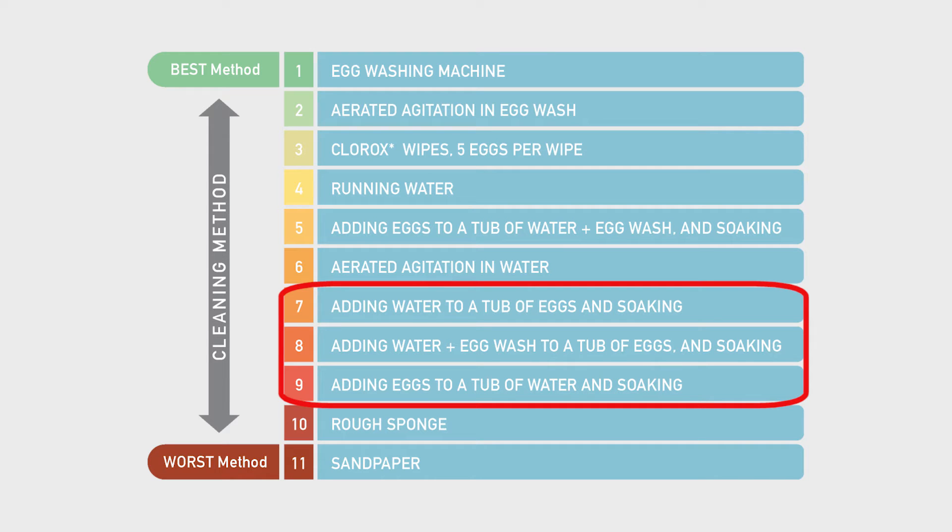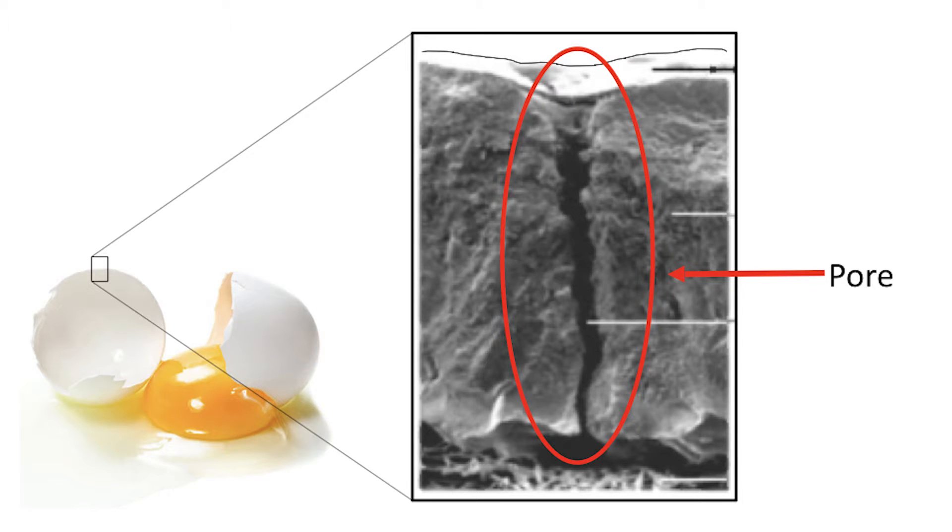There are several reasons to avoid soaking hatching eggs. Eggshells are not a solid barrier. An eggshell can have up to 17,000 pores that allow moisture and gas exchange to the embryo. The pores can also allow more than just moisture and gases to enter the interior of the egg.